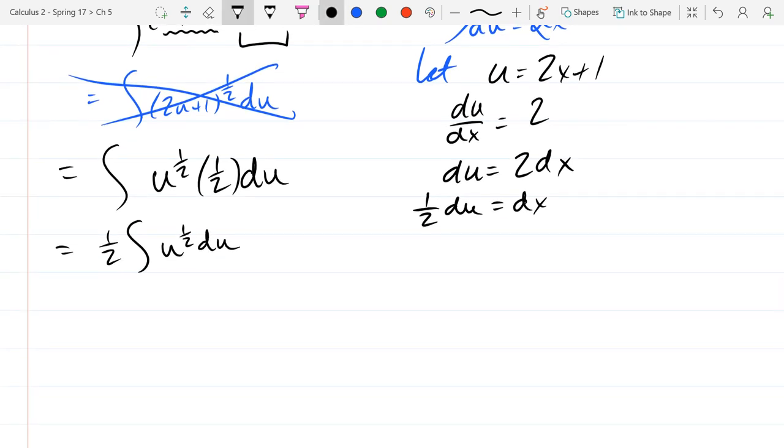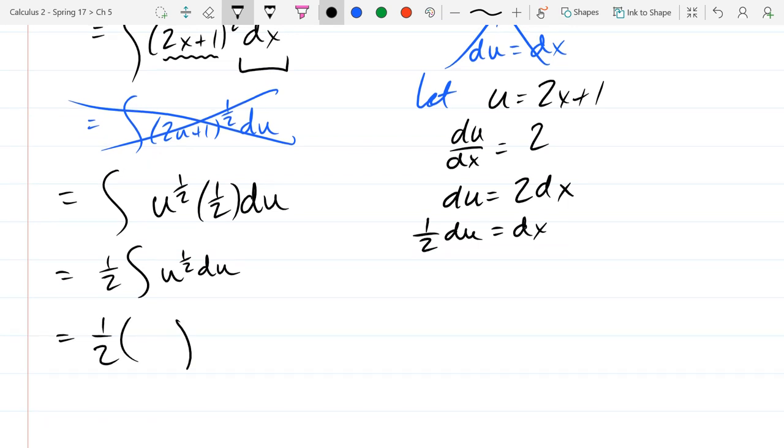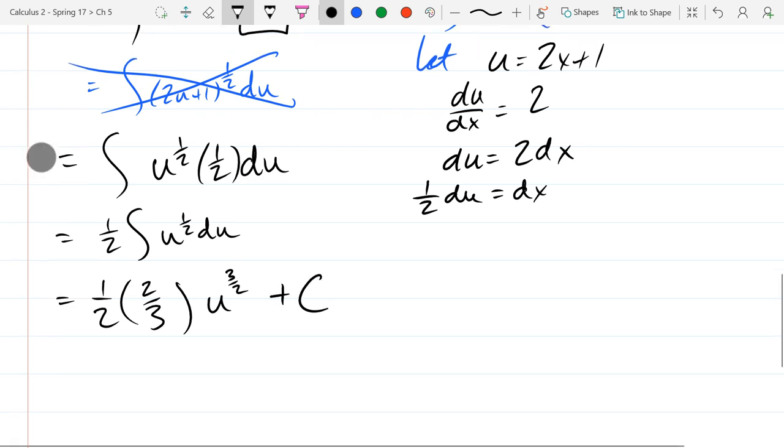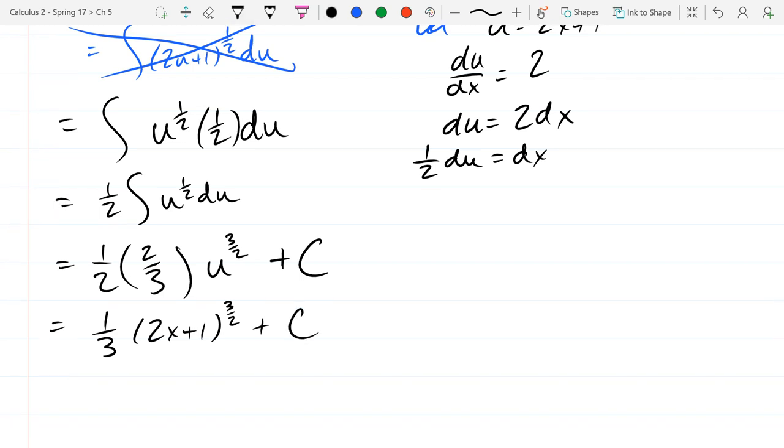So this is going to be integral u to the half power. dx is 1/2 du. Constant multiple rule. This 1/2 can move outside. And we're going to do the anti-power rule now. Guess and check. I know I'm going to need another multiple. Do not add 1 incorrectly. I know fractions are tricky. You got 1/2. You're adding 2 more halves. You get 3 halves. So make sure you're a little bit careful when you add 1 to fractions. Especially if they're already negative. Guess and check. The derivative will be 3/2 times u to the 1/2. So I need to compensate. Multiply by 2/3. So when I take derivative, that will cancel back out. Don't forget your constant. And we can clean this up a little bit. 1/3 u is 2x plus 1.